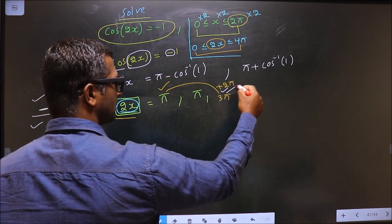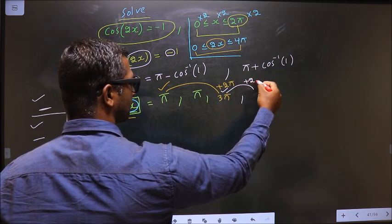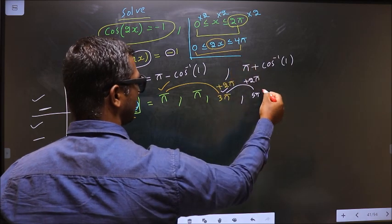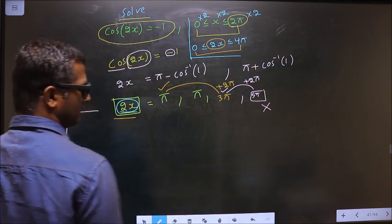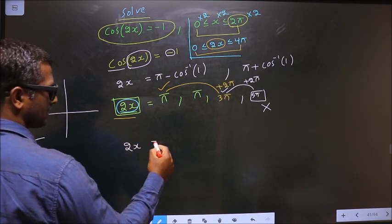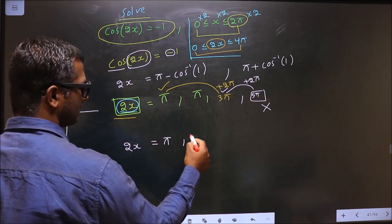To get another value, I should add 2π to this. This time I get 5π. This does not lie in this interval, so you reject it. So the values we got for 2x are π and 3π.